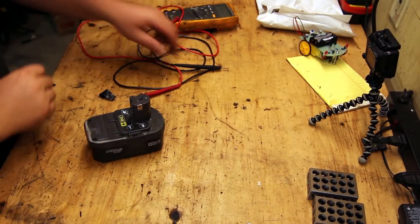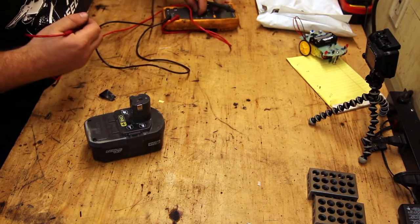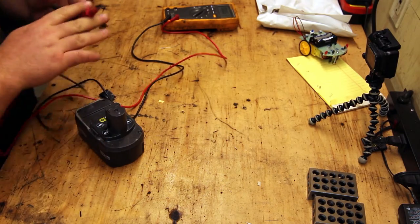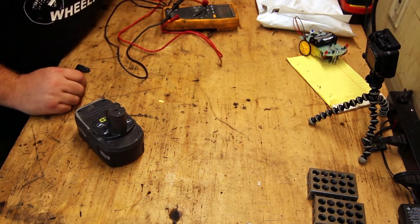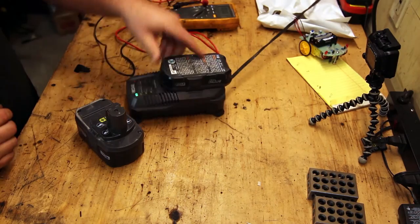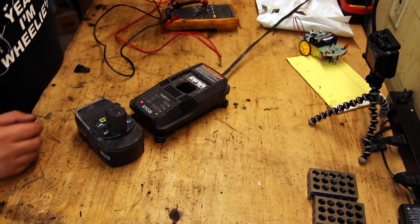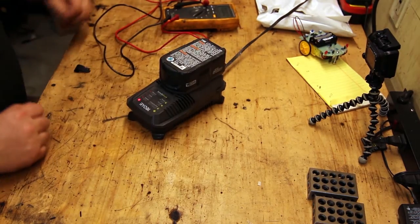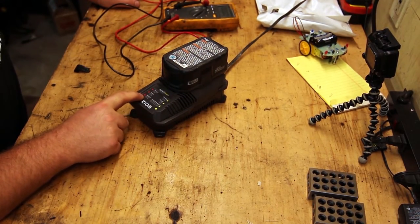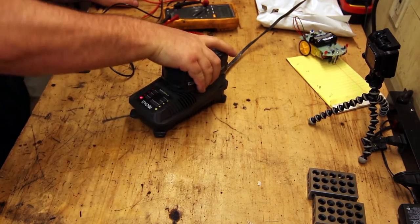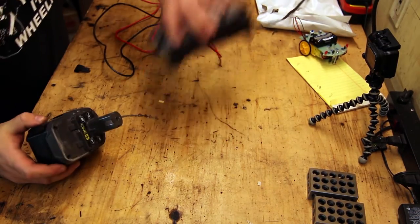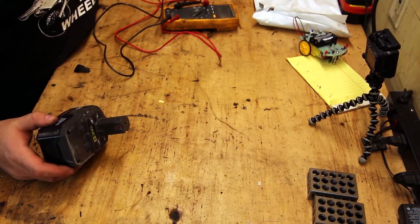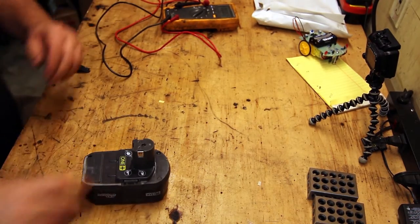Now first thing we're gonna do is we're gonna turn on the fluke to DC volts and see what this thing is reading now. It is completely flat. This is a standard Ryobi charger. Plug this in here you see it is flashing and flashing here indicates defective. So not getting any charge out of this thing and the charger says it's defective which to me is good to go ahead and take it apart.